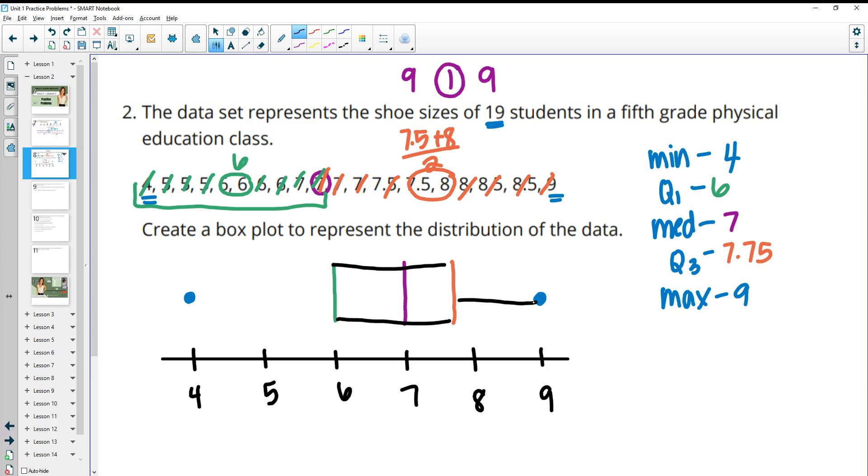And then you make these branches out to your min and max. So you can do it all in one color, obviously I'm just doing it in different colors so you can see. But then there's your box plot.